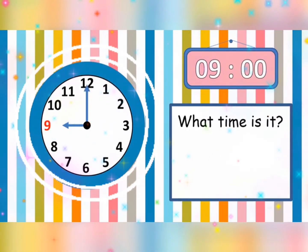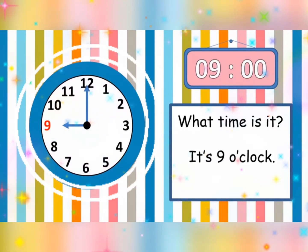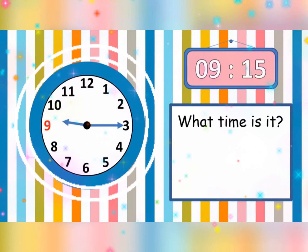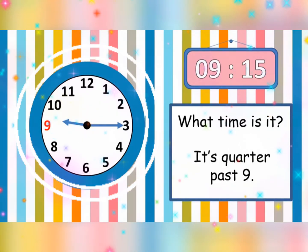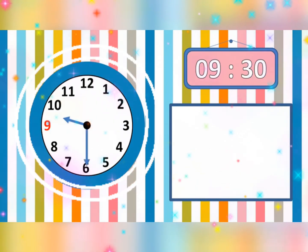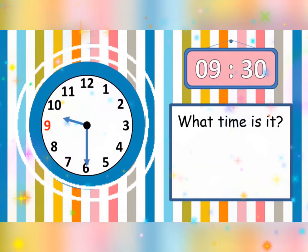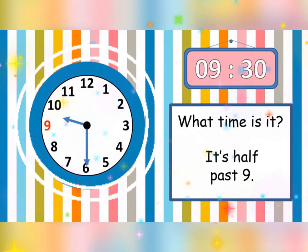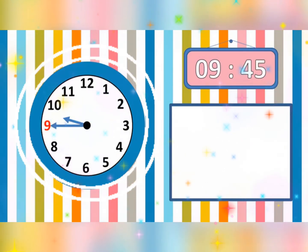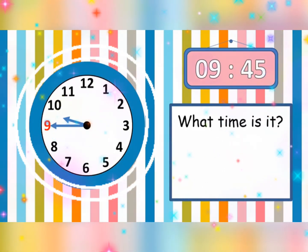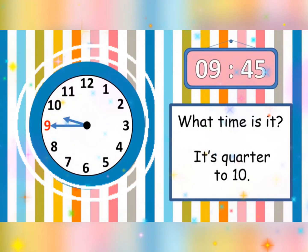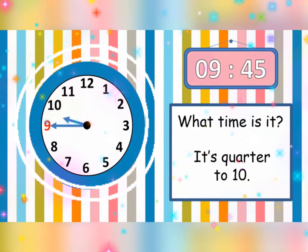What time is it? It is 9 o'clock. What time is it? It is quarter past 9. What time is it? It is half past 9. What time is it? It is quarter to 10.